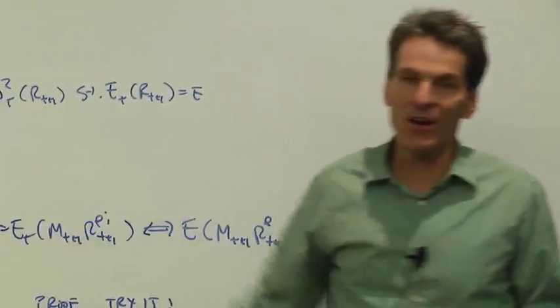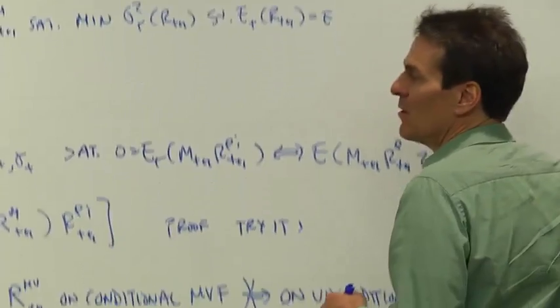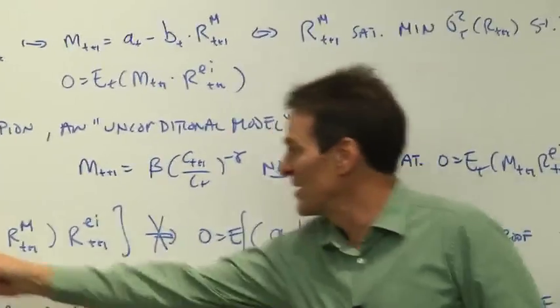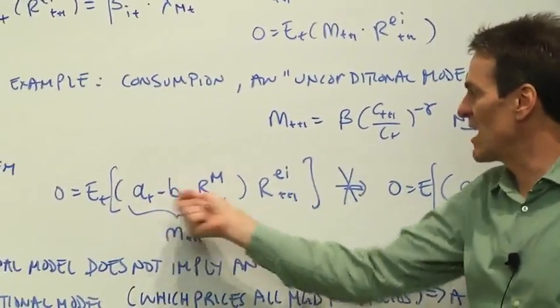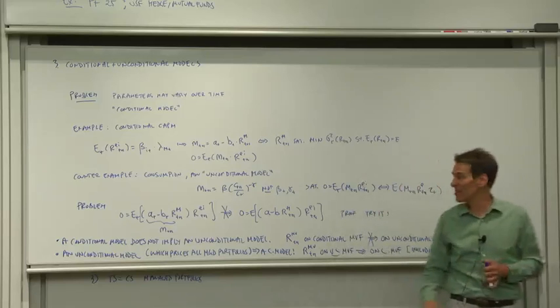Now, what's wrong with a model that's not so well-behaved like this, a model with time-varying parameters? Well, here's the problem. Take this conditional asset pricing model and try to condition it down. Zero equals ET times discounted payoff, where the discount factor has these time-varying coefficients into it.